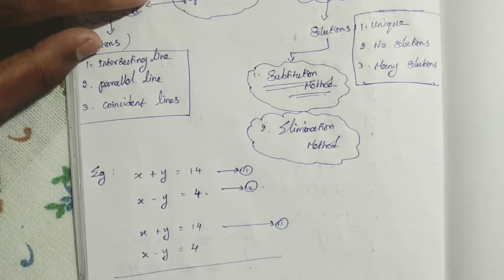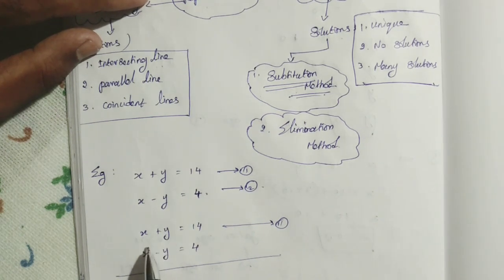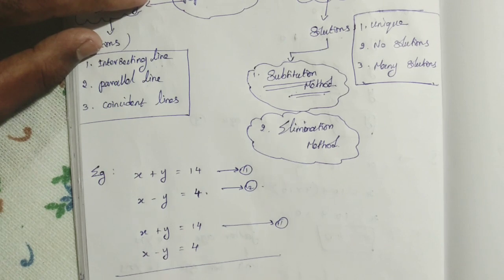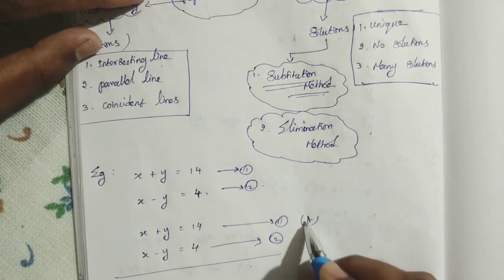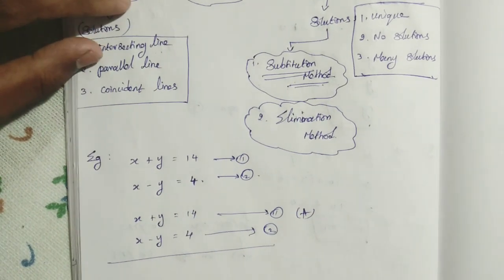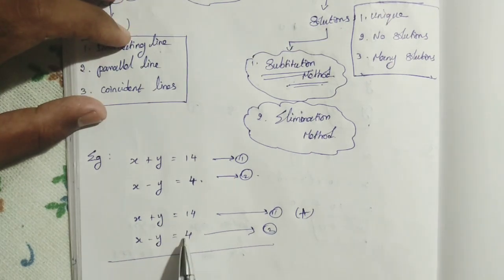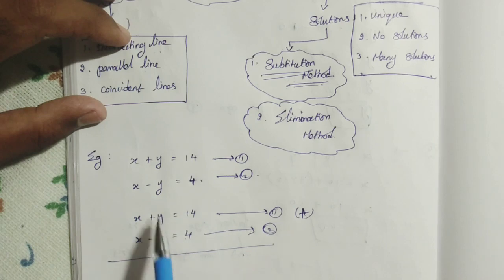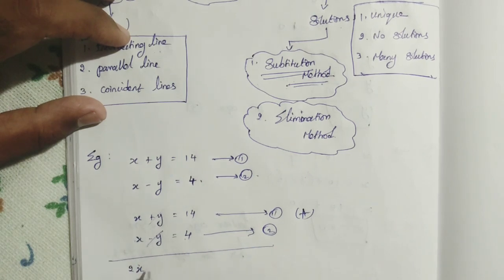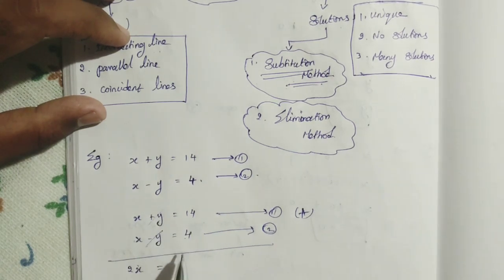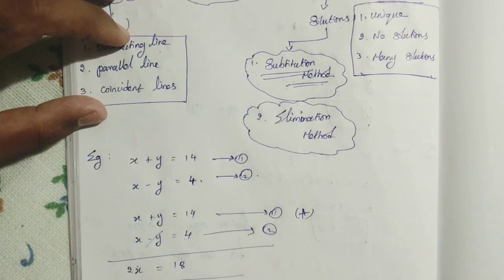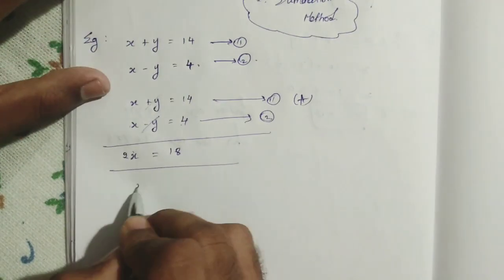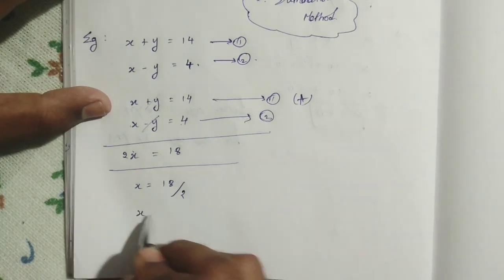Adding the equations: x plus x gives 2x, and plus y minus y gives 0y, which equals 14 plus 4, that is 18. I chose addition because it conveniently cancels the y terms. So 2x equals 18, therefore x equals 18 divided by 2, which gives x equals 9.